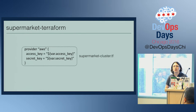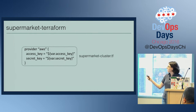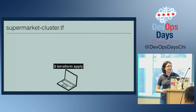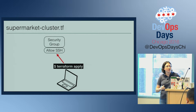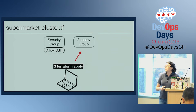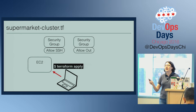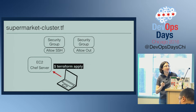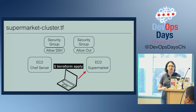Let's take a closer look at supermarketcluster.tf. This file has nearly 300 lines, so instead let's go through a visual representation of what it does. When I run Terraform apply, it first creates an AWS security group, adds a rule to allow SSH access, then spins up a second security group with a rule allowing traffic out to the public internet. Then it spins up an EC2 instance configured as a Chef server, and another EC2 instance configured as a supermarket server — an artifact repository for sharing Chef cookbooks and tools.